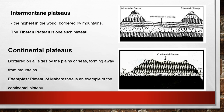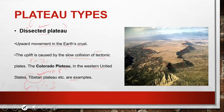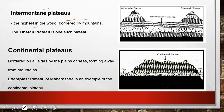The next type is the intermontane plateau — the highest in the world, bordered by mountains on all sides. For example, the Tibetan Plateau is both a dissected and an intermontane plateau. After the mountain range comes the plateau region — that is the intermontane plateau.